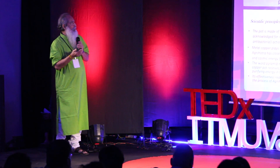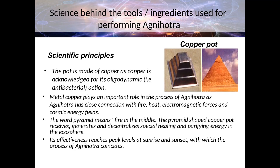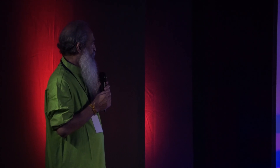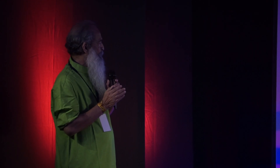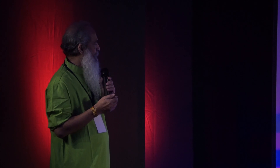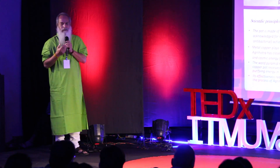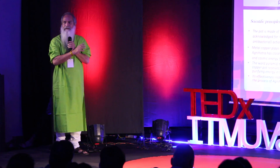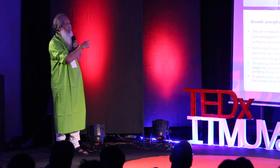The scientific principles behind the tools and ingredients: the pot is made of copper because copper is acknowledged for its oligodynamic — that is, antibacterial — action. Metal copper plays an important role in the process of Agnihotra. Agnihotra has a close connection with fire, heat, electromagnetic forces, and cosmic energy fields. The word pyramid means fire in the middle — fire plus 'amid,' a Latin word. The pyramid-shaped copper receives, generates, and decentralizes spatial healing and purifying energy in the ecosphere, reaching peak effectiveness at sunrise and sunset, which is precisely when Agnihotra is performed.